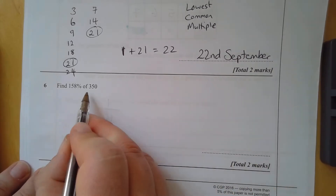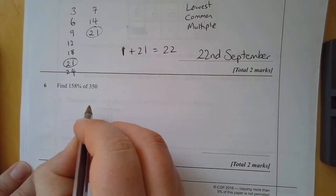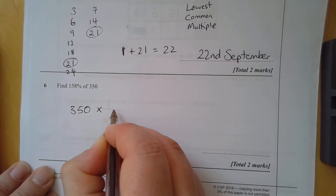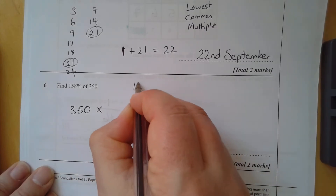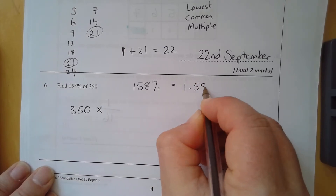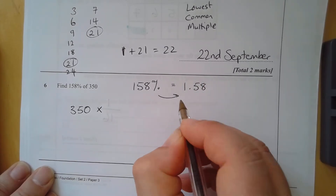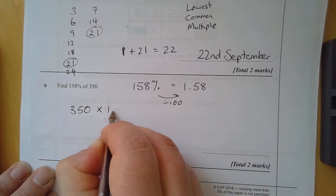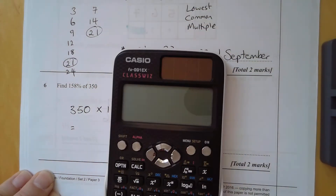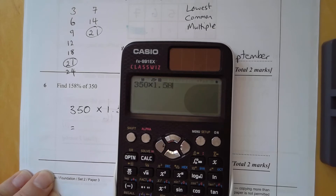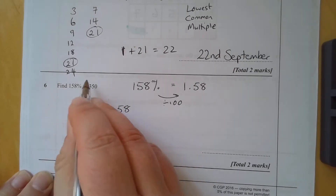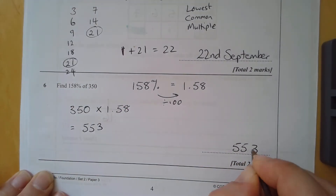158% of 350. We take 350 and multiply it by 1.58 as a decimal — because we divide by 100. So 350 × 1.58 = 553.50. It's not a pound or anything so we just write 553.